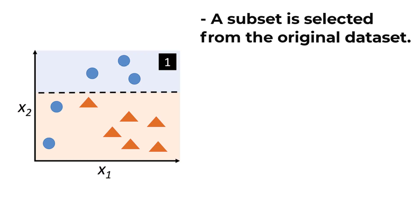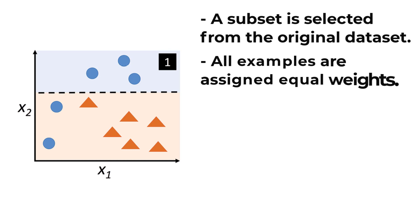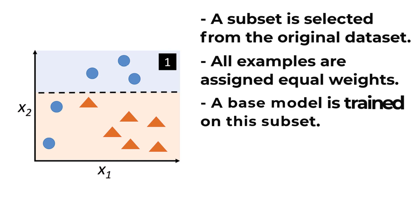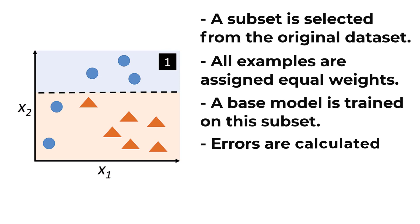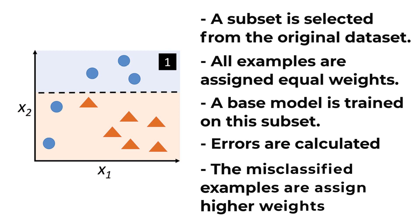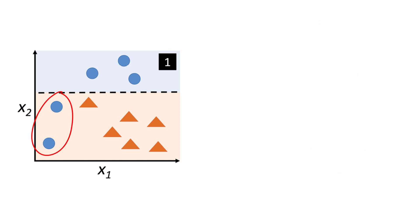First, a subset is selected from the original dataset. Initially, all training examples are assigned equal weights. A base model is trained on this subset. This model is used to make predictions on the dataset. Errors are calculated using actual values and predicted values. For the next round, the misclassified examples are assigned higher weights. Here, the two misclassified blue circle points will be assigned higher weights.